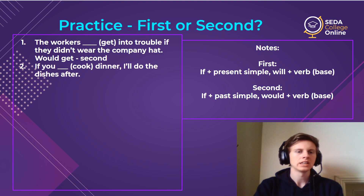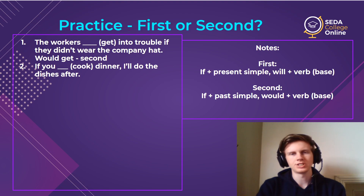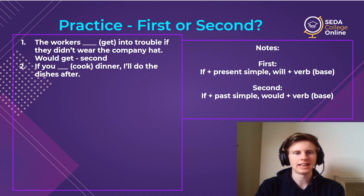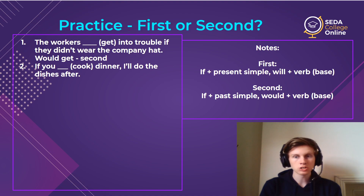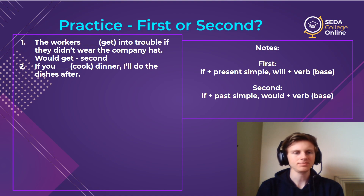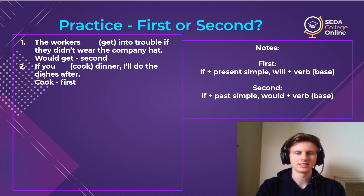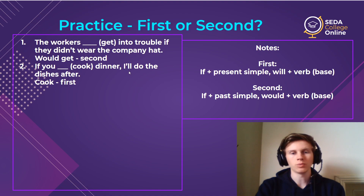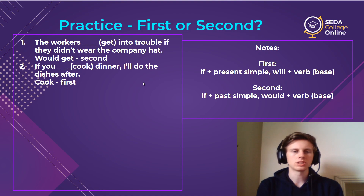Number two: 'If you ___ dinner, I'll do the dishes after.' First or second conditional? The answer is 'cook' — this is the first conditional. We know because of the apostrophe 'L': 'I'll do the dishes' means 'I will.' Will comes first, so it's present simple in the dependent clause. The complete sentence: 'If you cook dinner, I'll do the dishes after.' No change — just 'cook' because it's present simple.